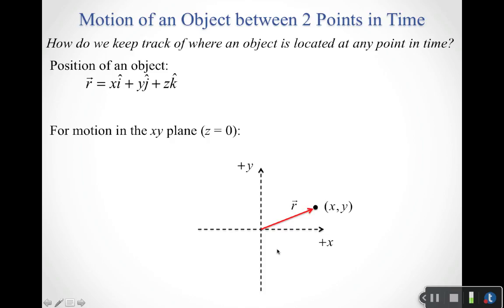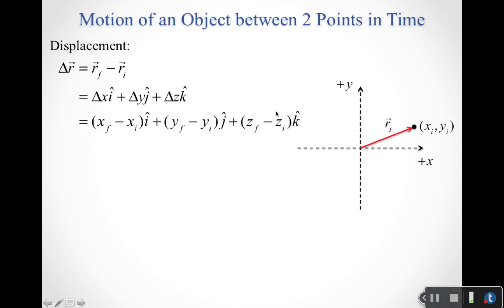Let's limit ourselves to motion within the xy plane for the picture — we'll include z in the discussion, but in our picture let z equal zero. Here is our object at some point in time, at position x and position y, so here are its x and y coordinates, and its z coordinate is zero.